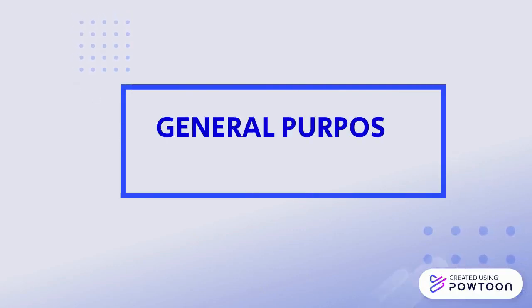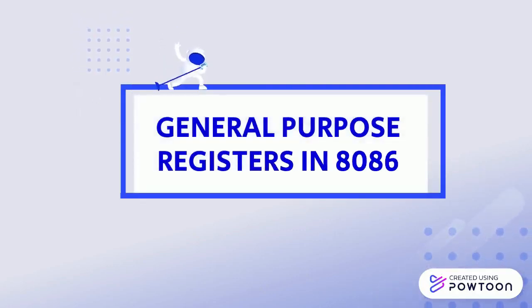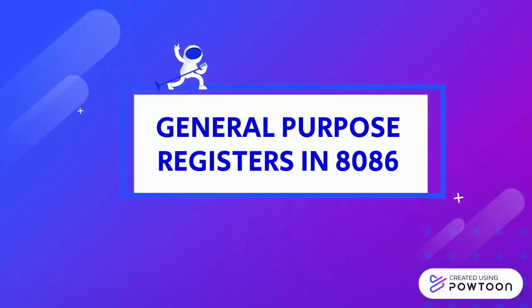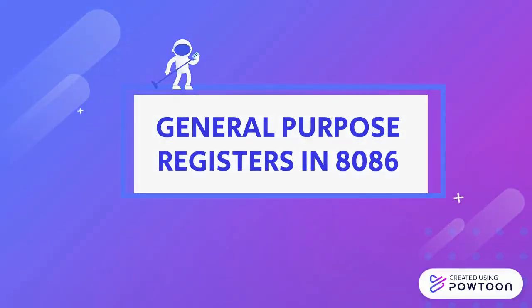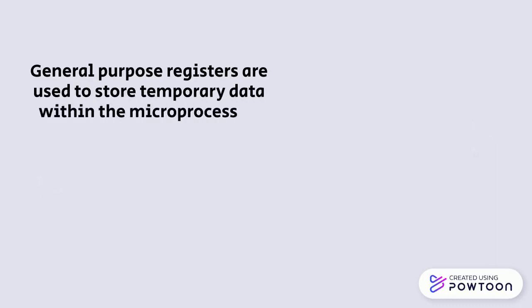Hello everyone. In this video we are going to learn about the general purpose registers in 8086 microprocessor. General purpose registers are used to store the temporary data within the microprocessor. There are 8 types of general purpose registers in 8086 microprocessor.